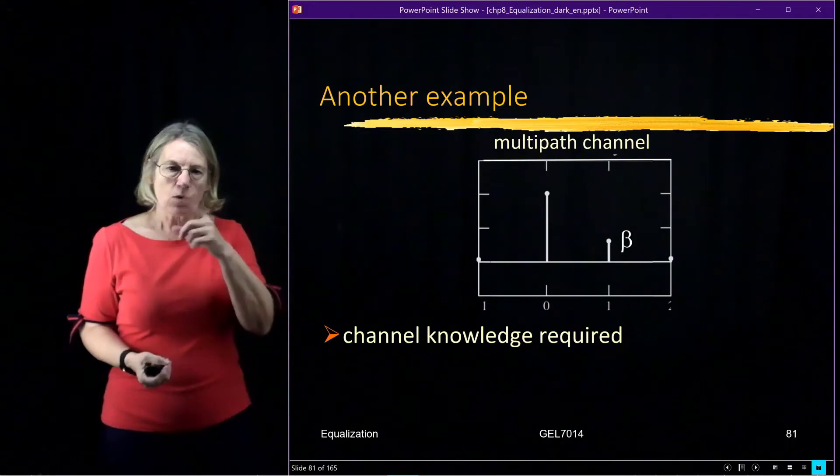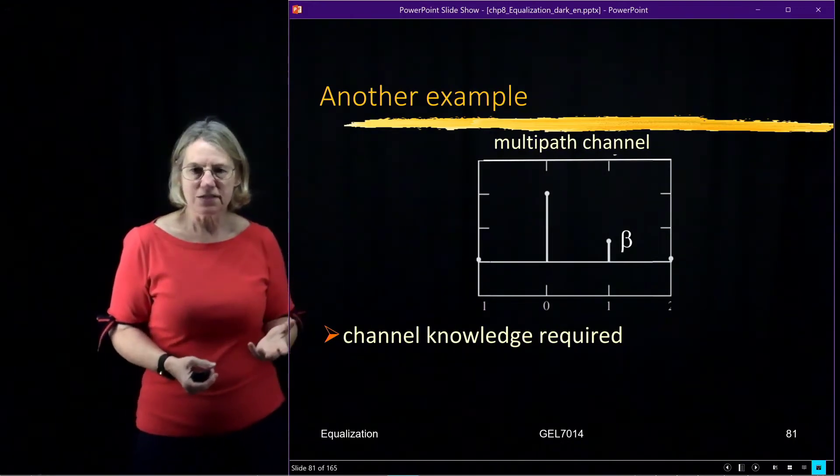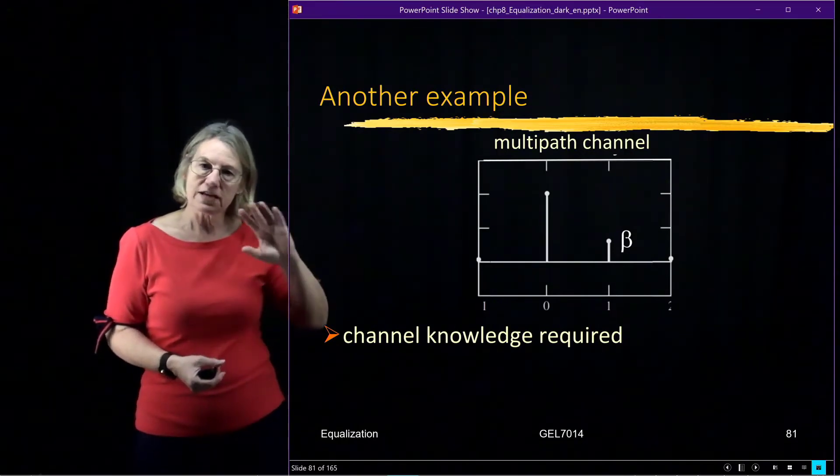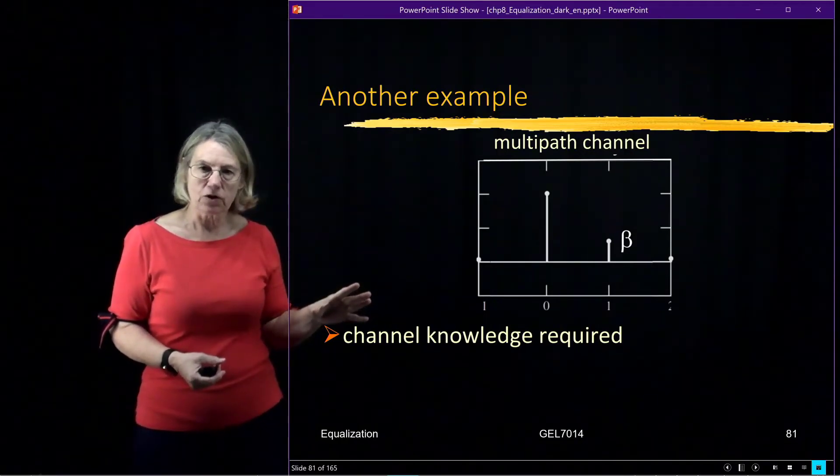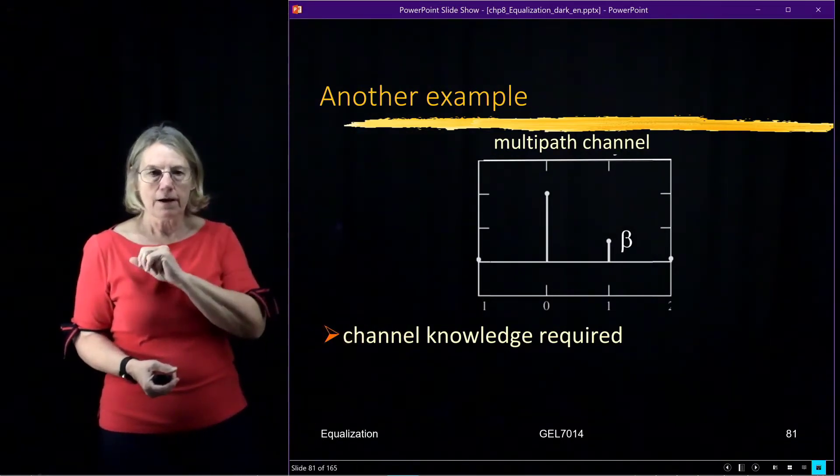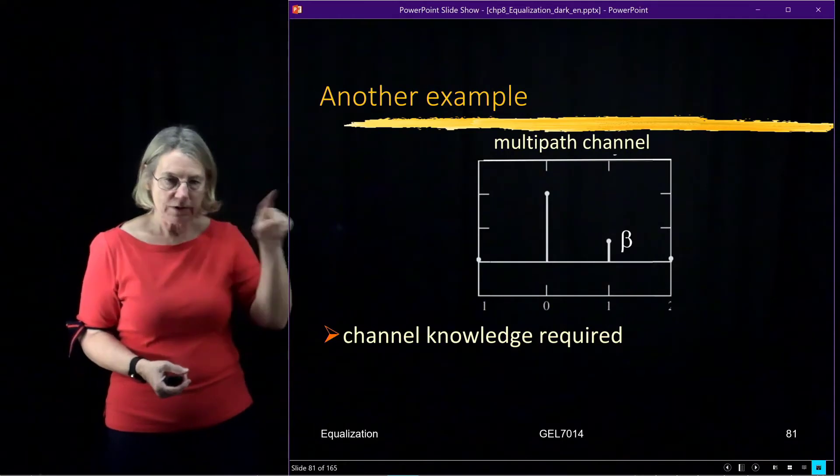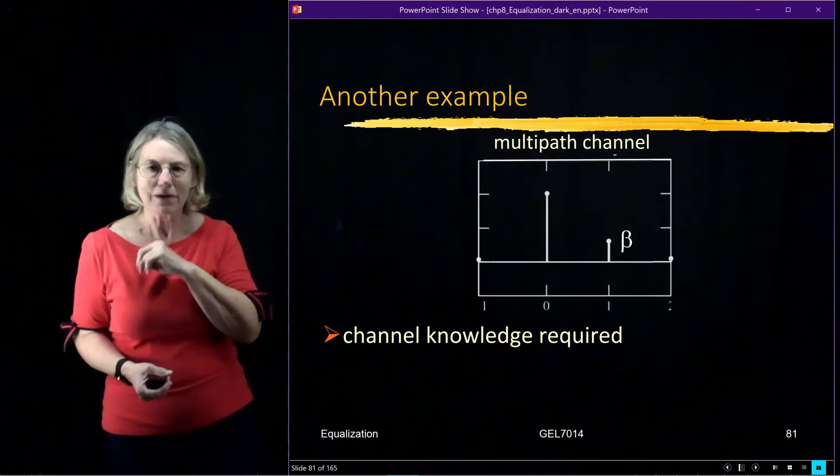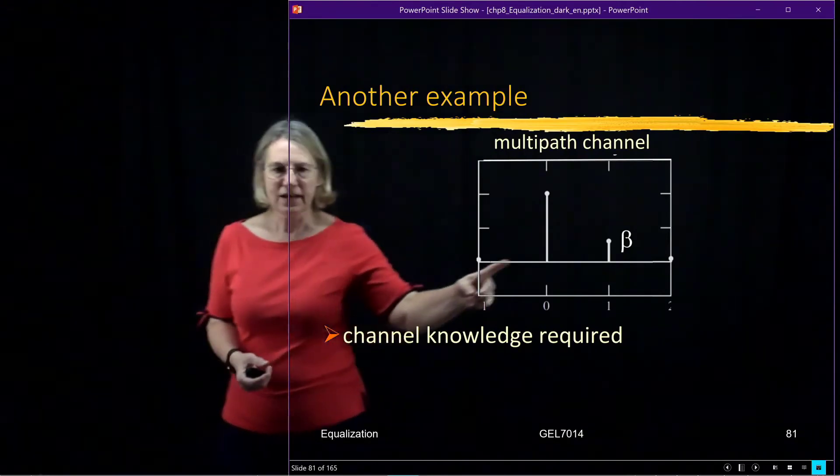So I'm going to take one particular example just because it's easy to calculate analytically those expected values that we looked at earlier. Suppose I have a very simple multipath channel, just two non-zero elements in the impulse response.